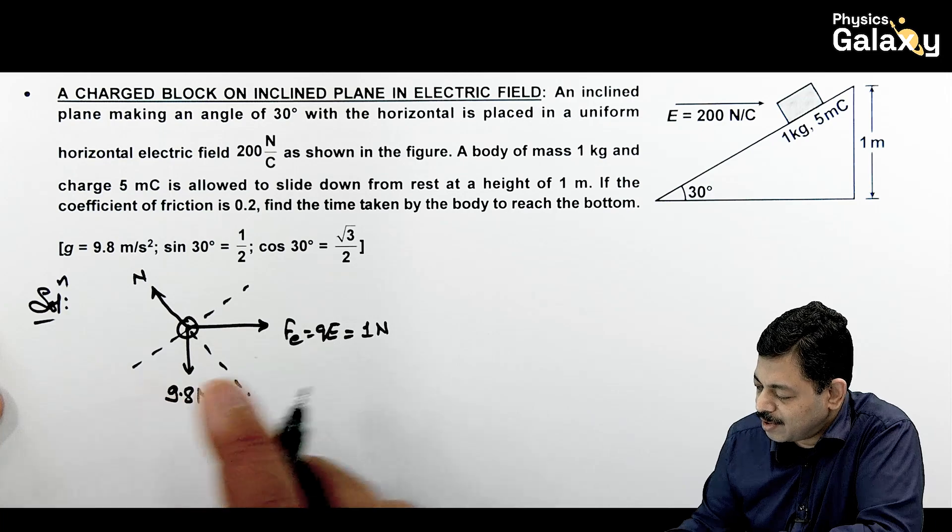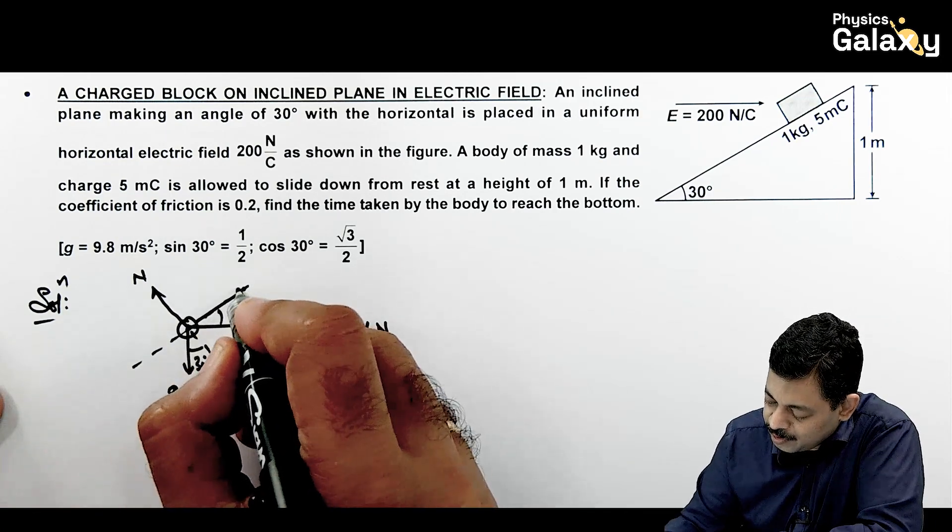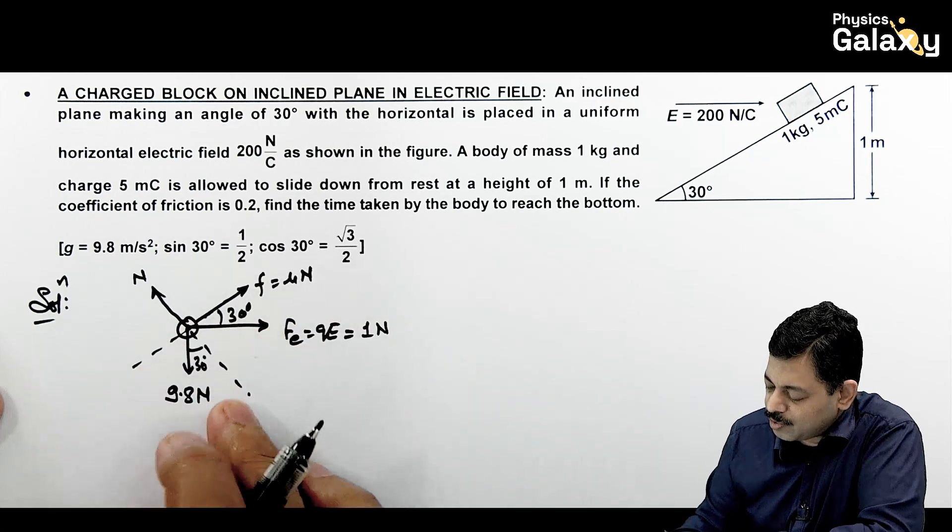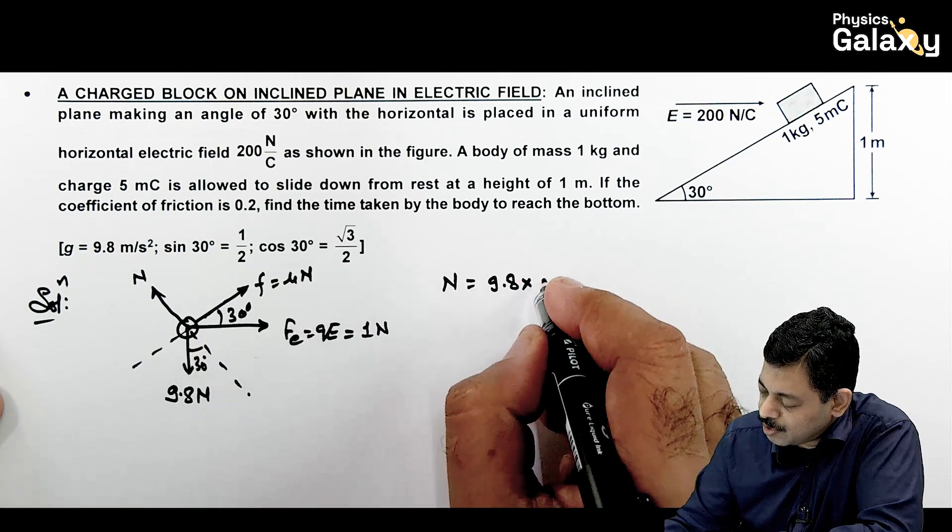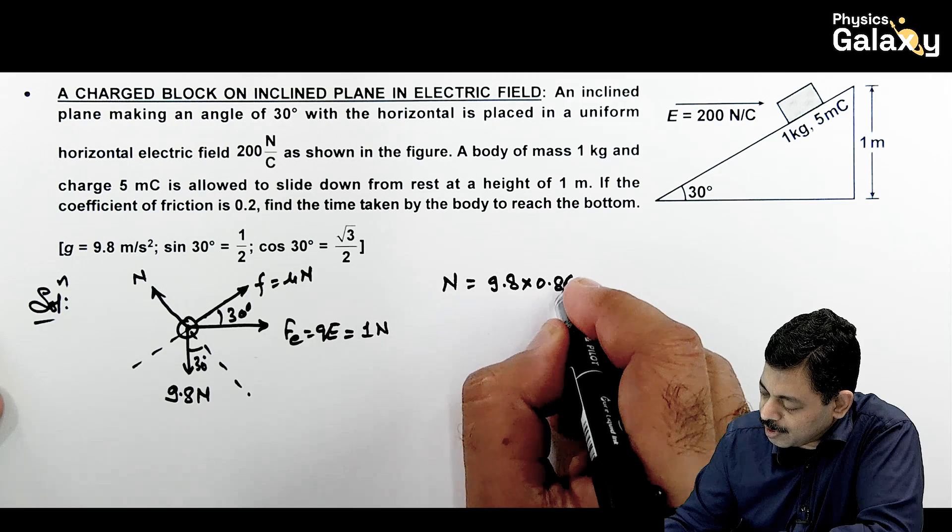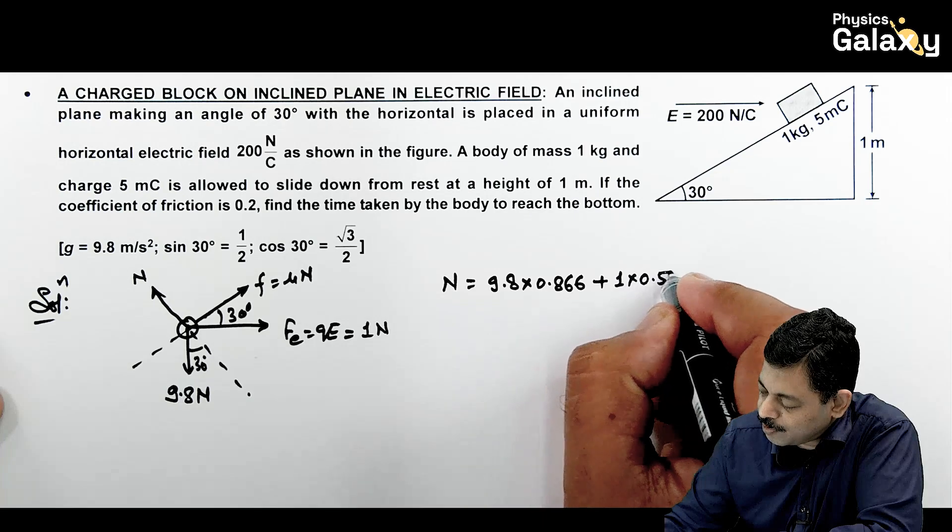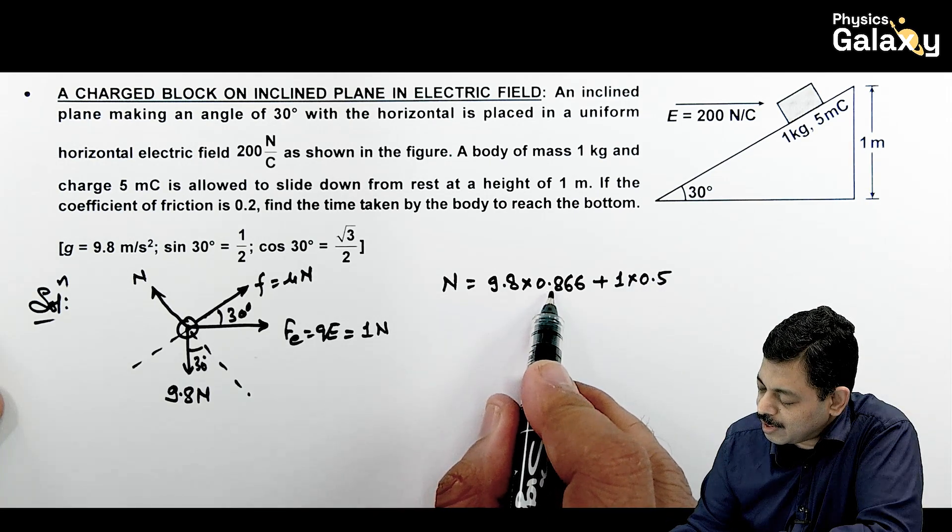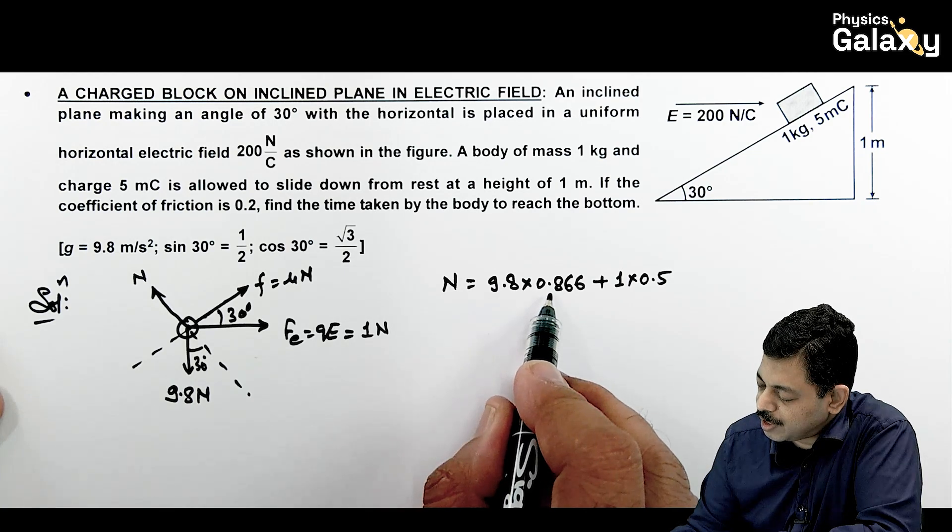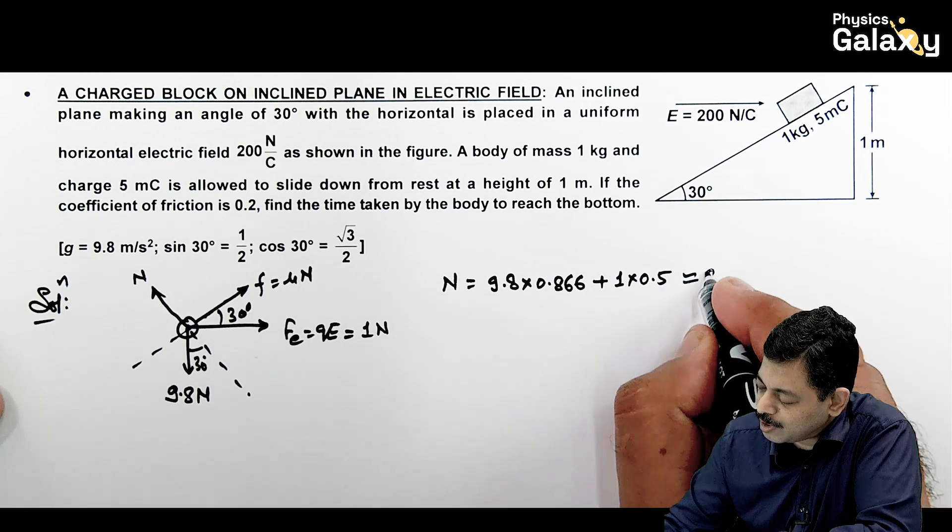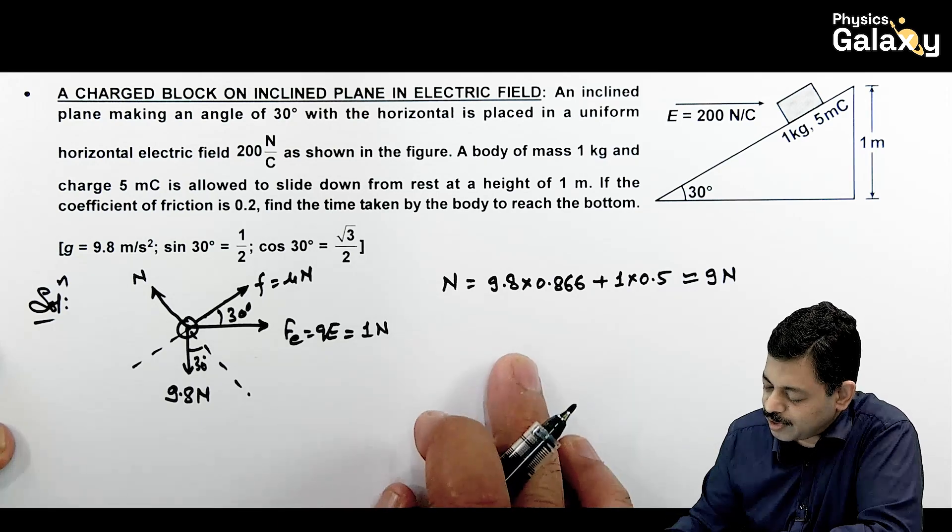Here if this angle is 30, this is 30 degrees, this is also 30 degrees. As it is sliding down, friction will act here which is mu n. So if we see n's value, normal reaction will be 9.8 cos 30 is root 3 by 2 is 0.866, plus here it is 1 sin 30, which is 1 into 0.5. So here 9.8 into 0.8 will come, this is approximately 9 Newton. So you can do the calculation better when you go for the exact calculations.